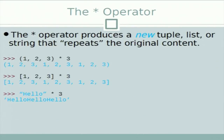The star operator produces a new tuple, list, or string that repeats the original content. For example '(1, 2, 3) * 3' returns '(1, 2, 3, 1, 2, 3, 1, 2, 3)'. Similarly for lists and strings: 'hello' multiplied by 3 returns a new string 'hellohellohello'.